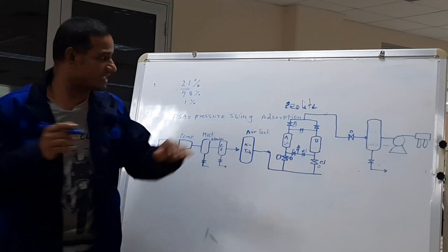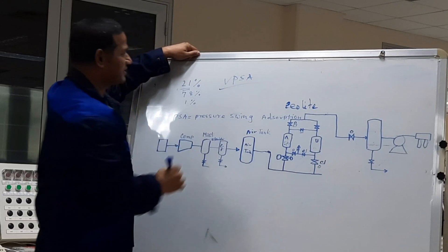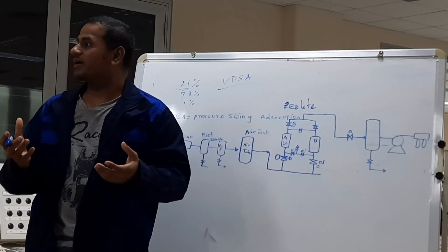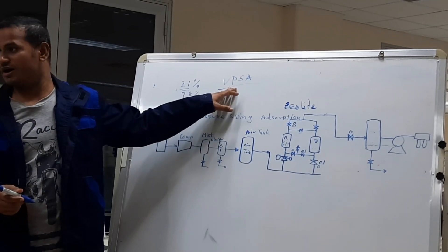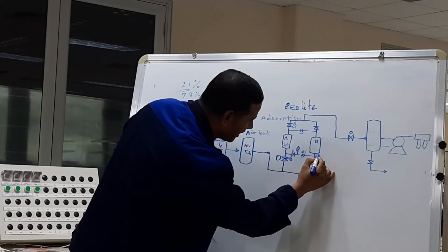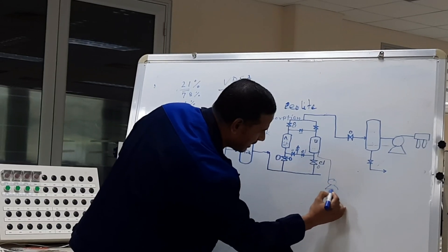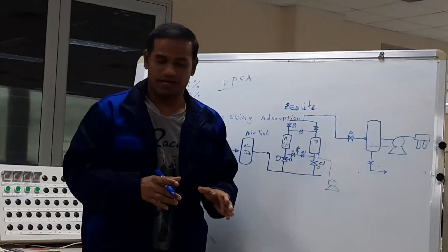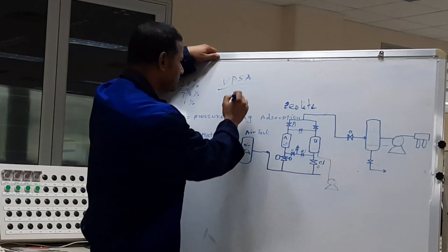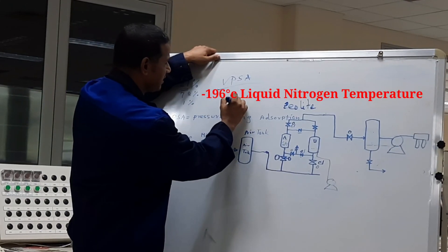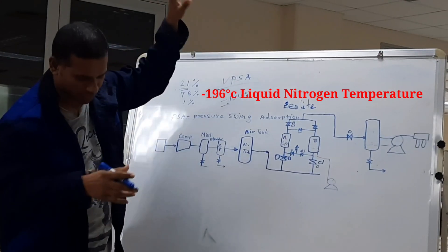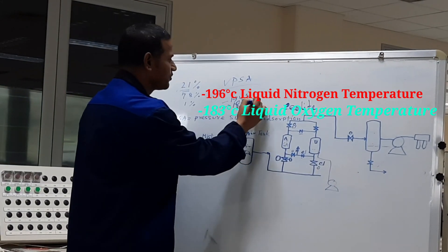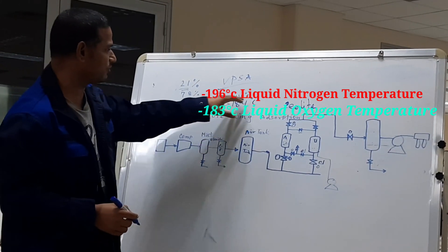Some plants use BPSA — Blowdown Pressure Swing Adsorption. In BPSA, there is one extra line where a booster pump is used to quickly reduce the vessel pressure during regeneration. Some plants also use cryogenic oxygen units. For cryogenic, the nitrogen temperature is minus 196 degrees centigrade. To reduce to the cryogenic point, the oxygen temperature comes down to minus 184 degrees centigrade, at which point it becomes liquid oxygen stored as a cryogenic liquid.